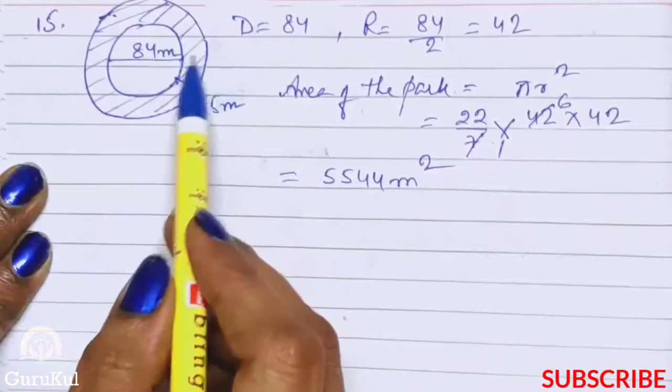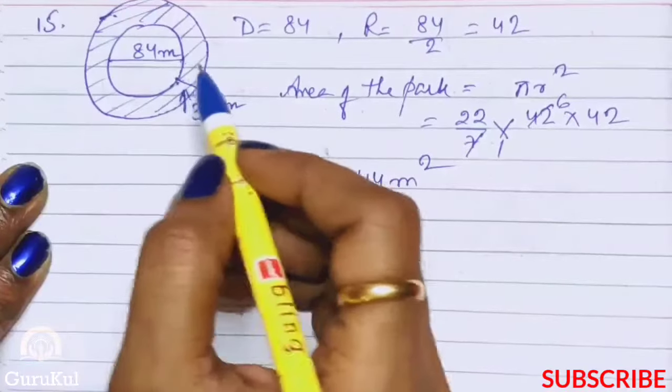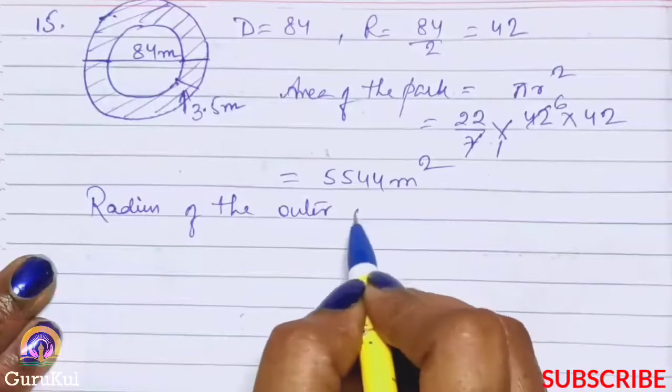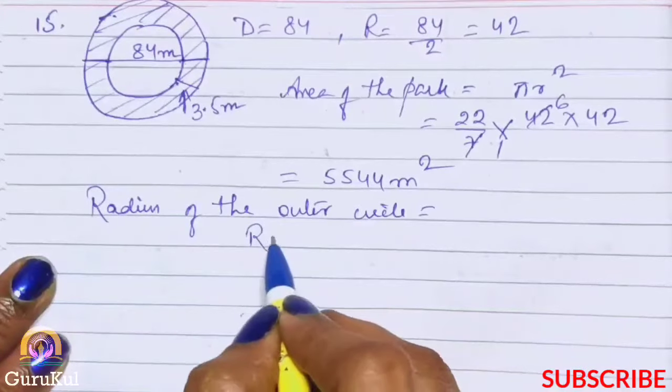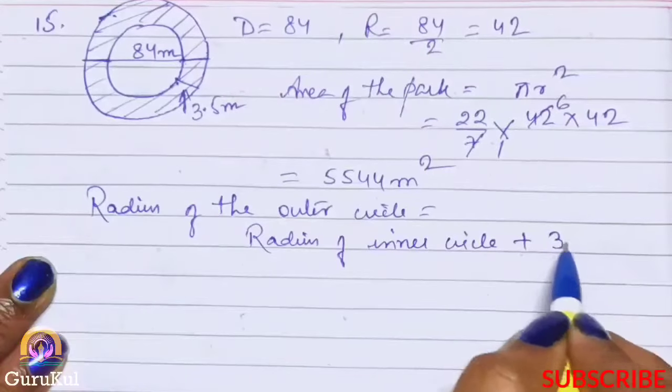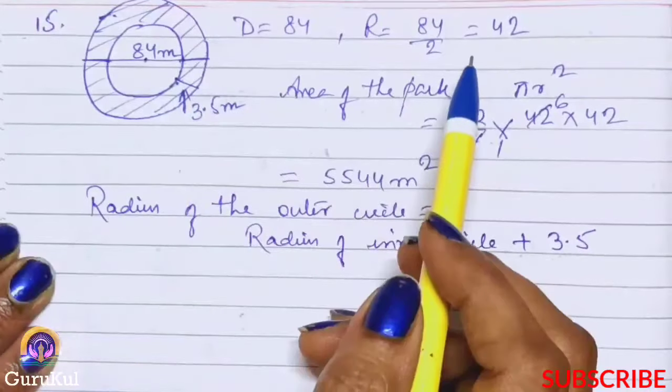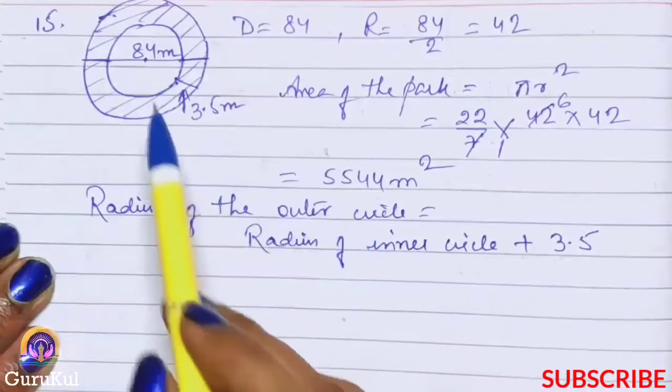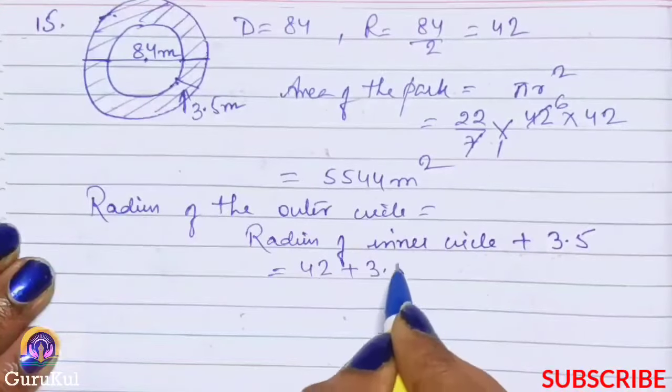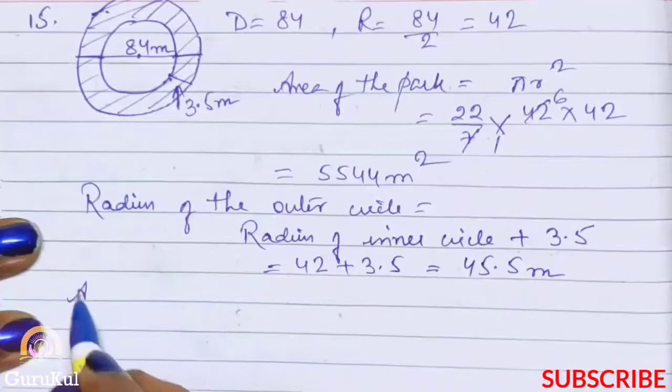Now let us talk about the outer circle. So area of the outer circle is equal to radius of inner circle plus 3.5. See, this is the center. We knew the inner radius was 42. So radius of the outer circle is 42 plus 3.5, which is equal to 45.5 meters. Now we will find its area.